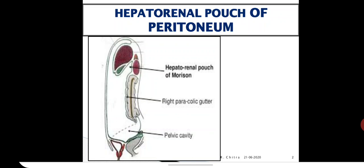Below, it is communicating with the greater sac — specifically the infracolic compartment of the greater sac — along the right paracolic gutter, and from there it opens into the pelvic peritoneum. These are the boundaries of the Hepatorenal Pouch.